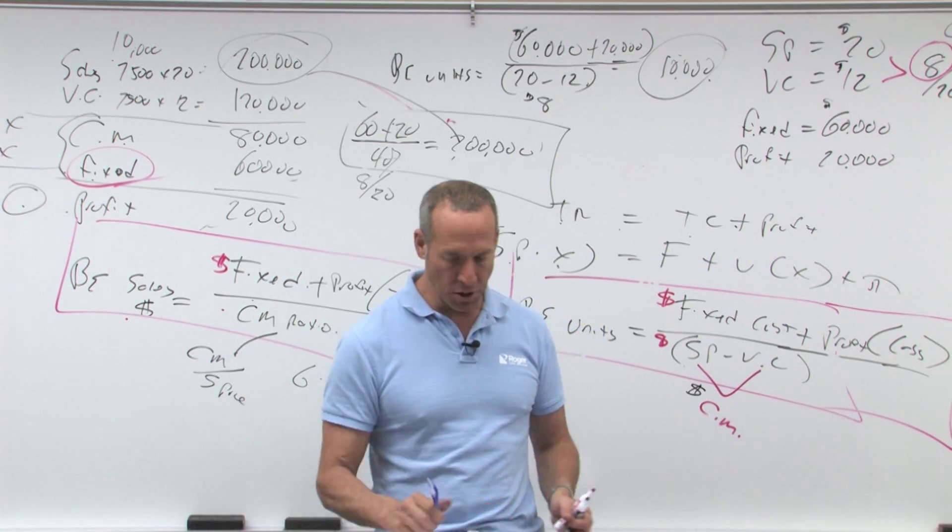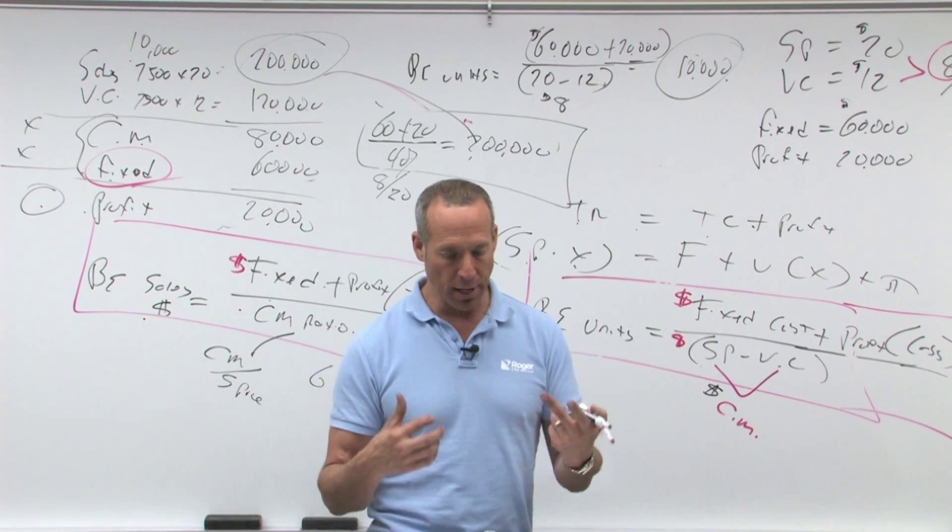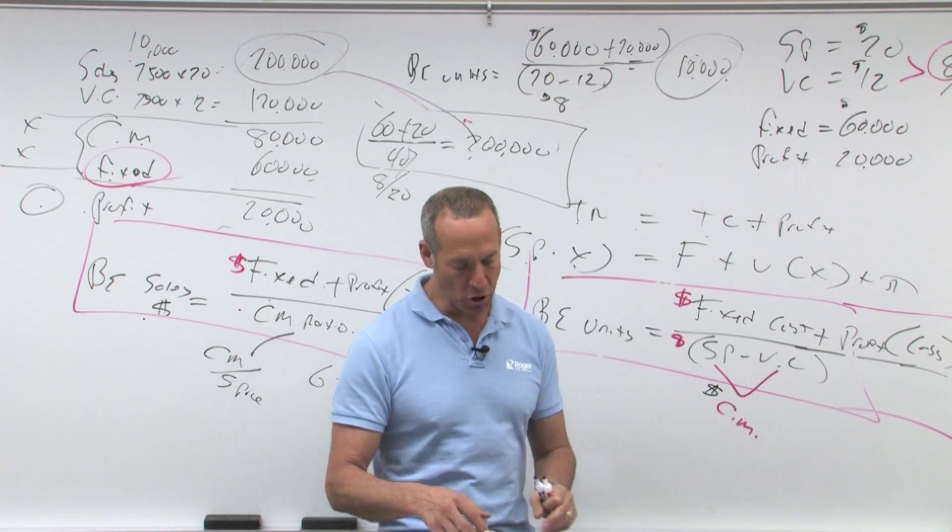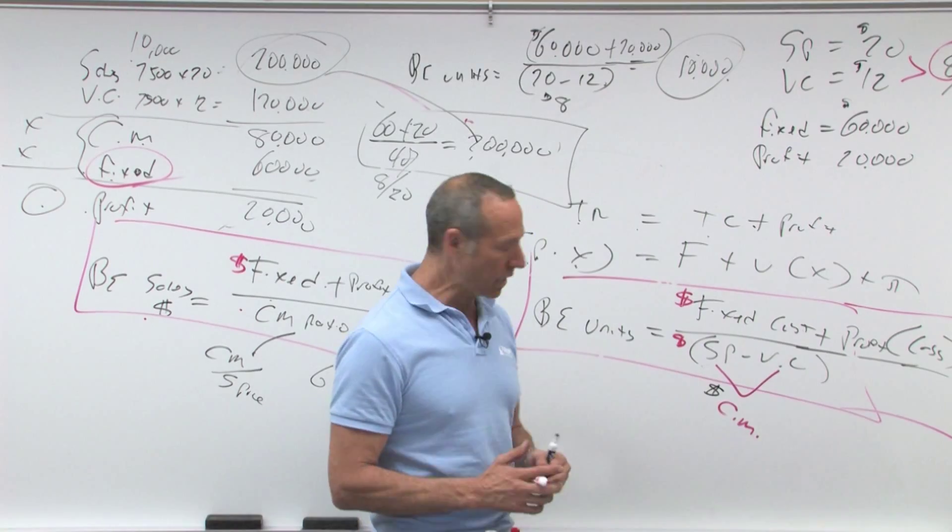then what we can do is use that, plug it in to figure out how many sales... What does it say? It says, what is the projected profit of a million two, so we've got to figure out what our profit is. All right, so this one's a little tricky.